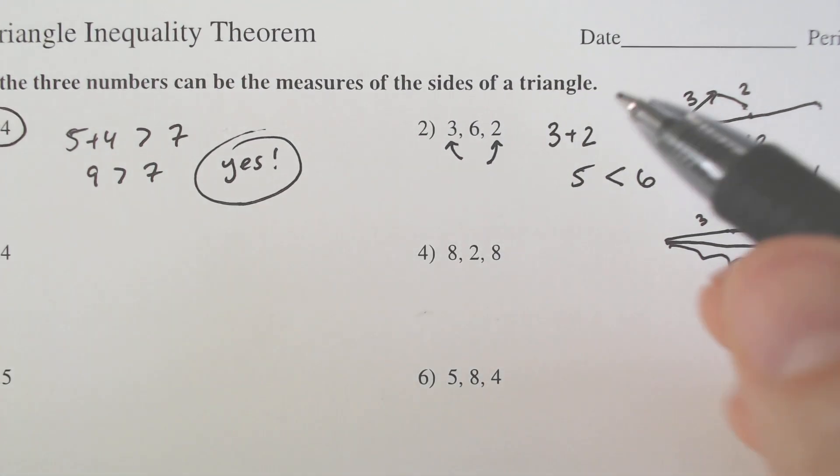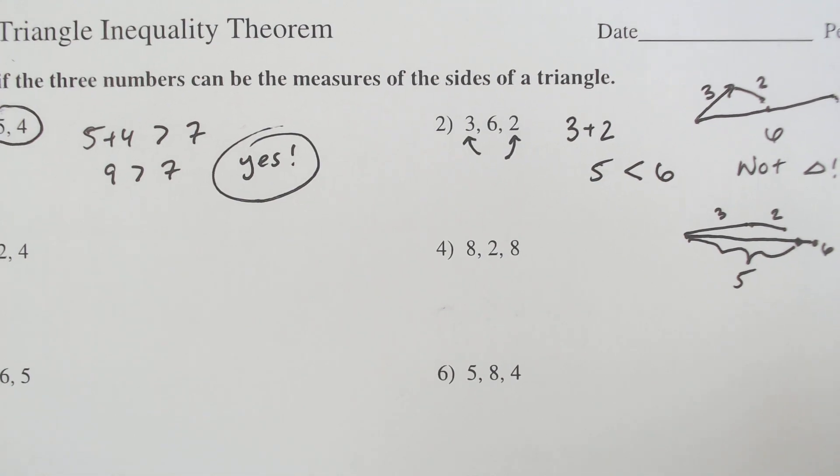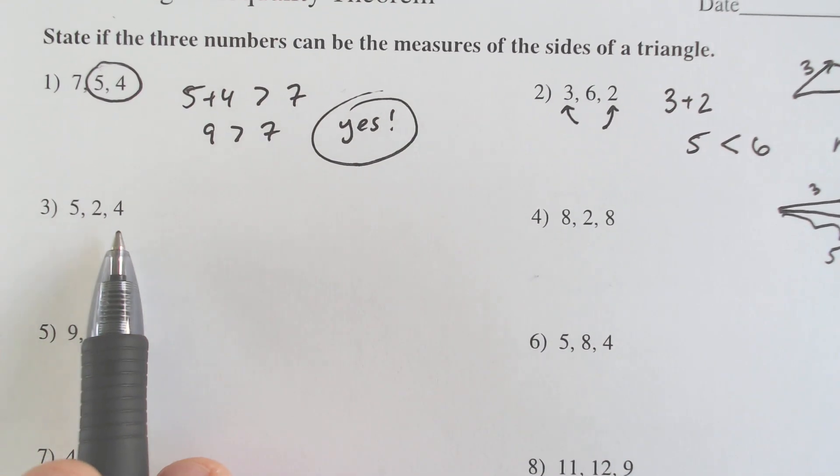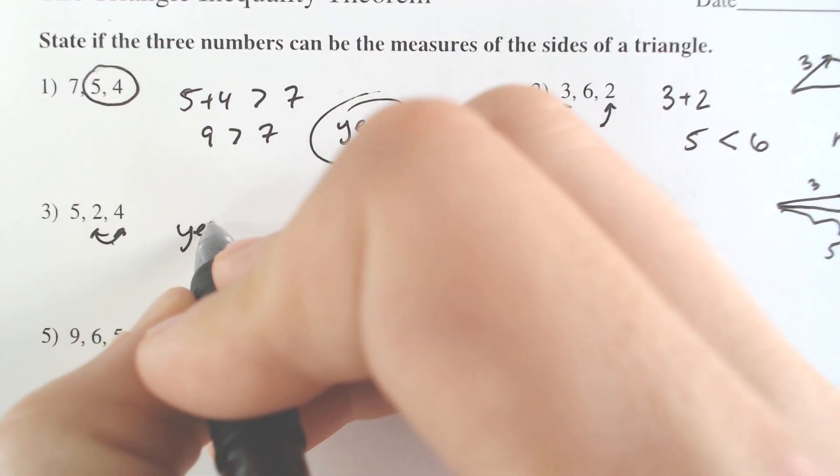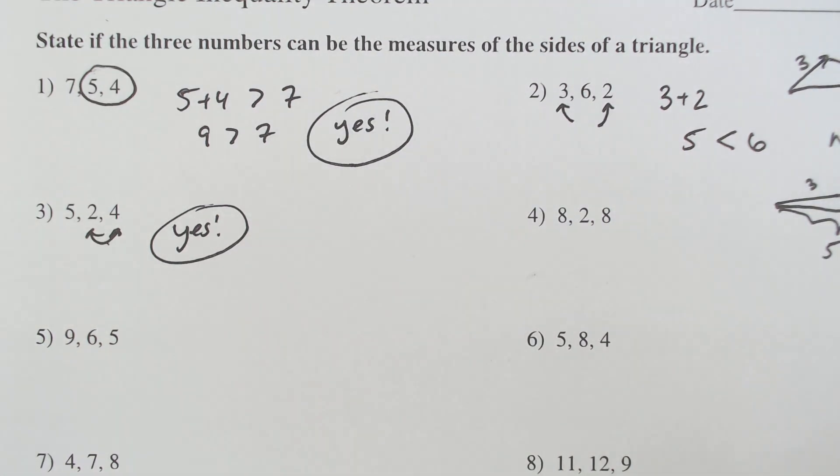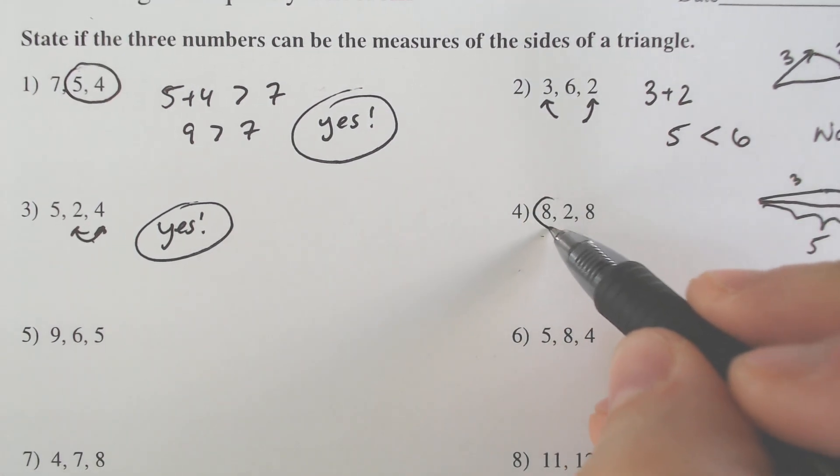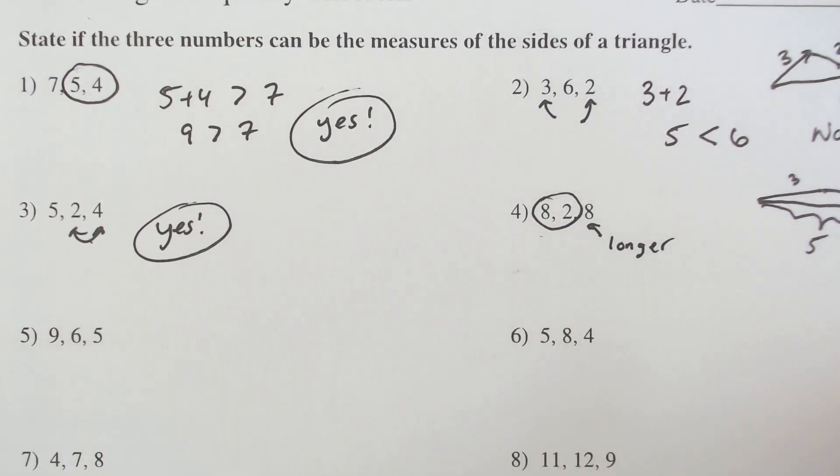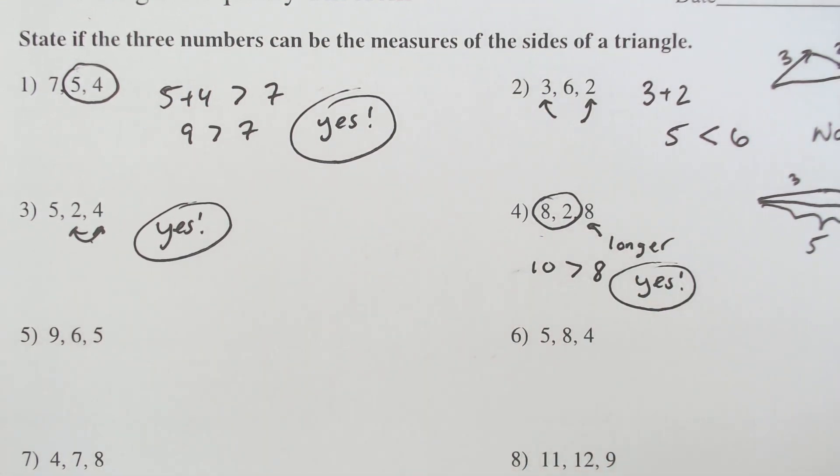So that's why the two shorter sides have to be longer than the other. It can't be equal because if it was equal, they would just be two lines budding up next to each other. So here we got 2 and 4. 2 plus 4 makes 6. 6 is bigger than 5. So yes, this can be a triangle. And here, even though two of the sides are equal, 8 and 2 could be considered two of the sides, and then this could be considered just one of the longer sides. And 8 plus 2 is definitely bigger than 8. 10 is greater than 8. So yes, this is a triangle as well.